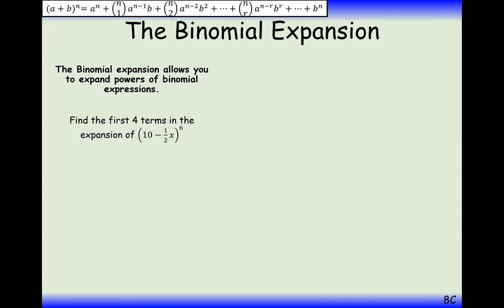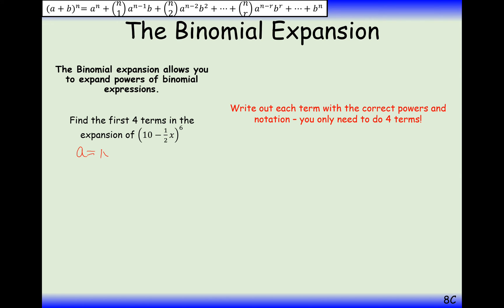A slightly more tricky one here, but exactly the same rules apply. We set a as 10, b as negative one-half x, and n as 6. We only need to go up to four terms.